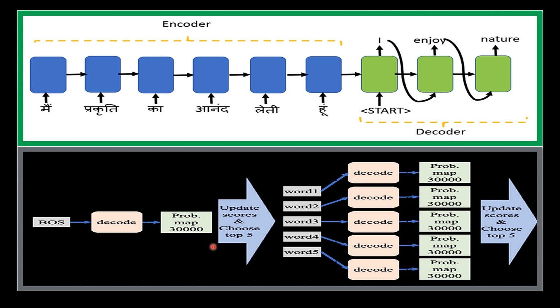The main advantage of beam search over greedy search is that it considers the possible effect of future words, which can help avoid local optima and improve the overall quality of the generated sequence. However, beam search is computationally more expensive than greedy search because it maintains a set of sequences instead of a single sequence at each step.